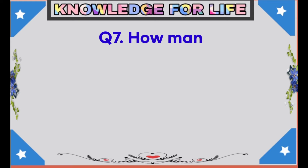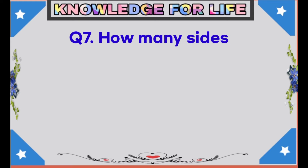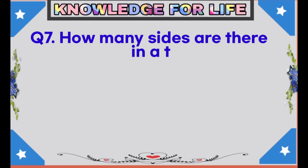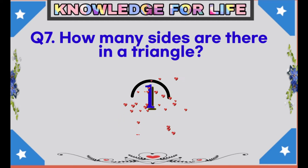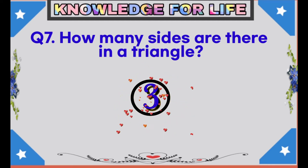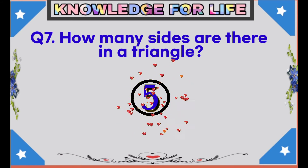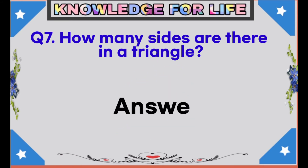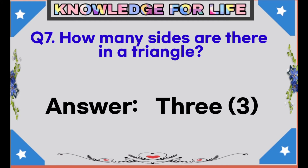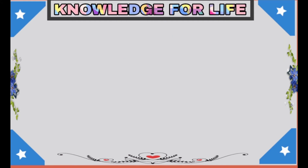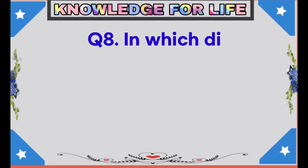Question number 7: How many sides are there in a triangle? Answer: 3 sides are there in a triangle.